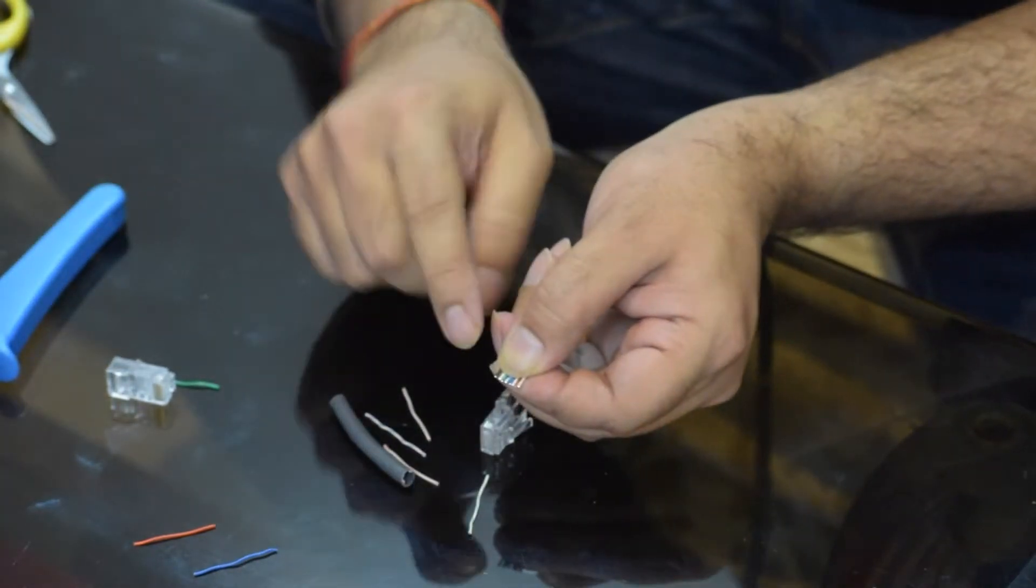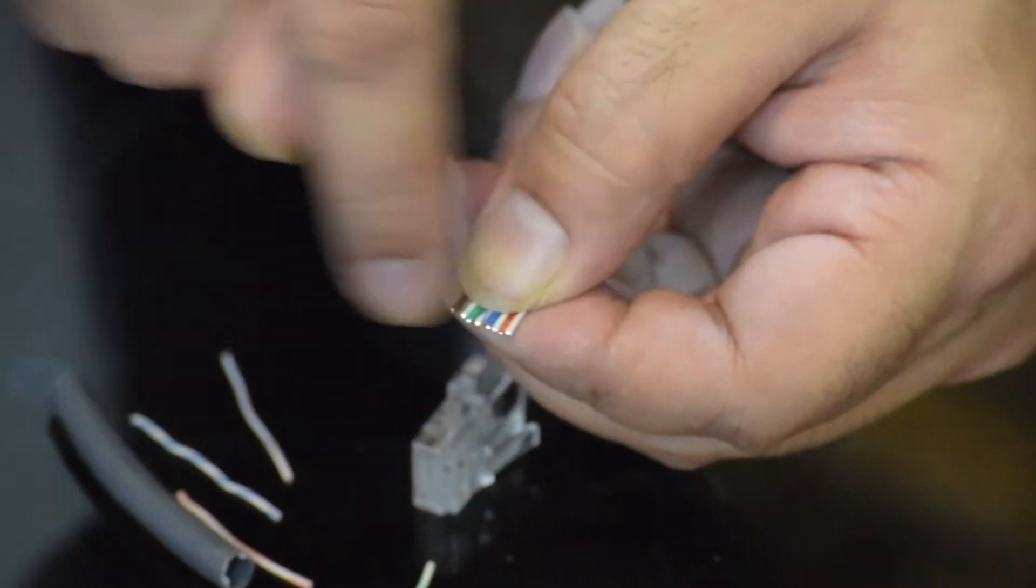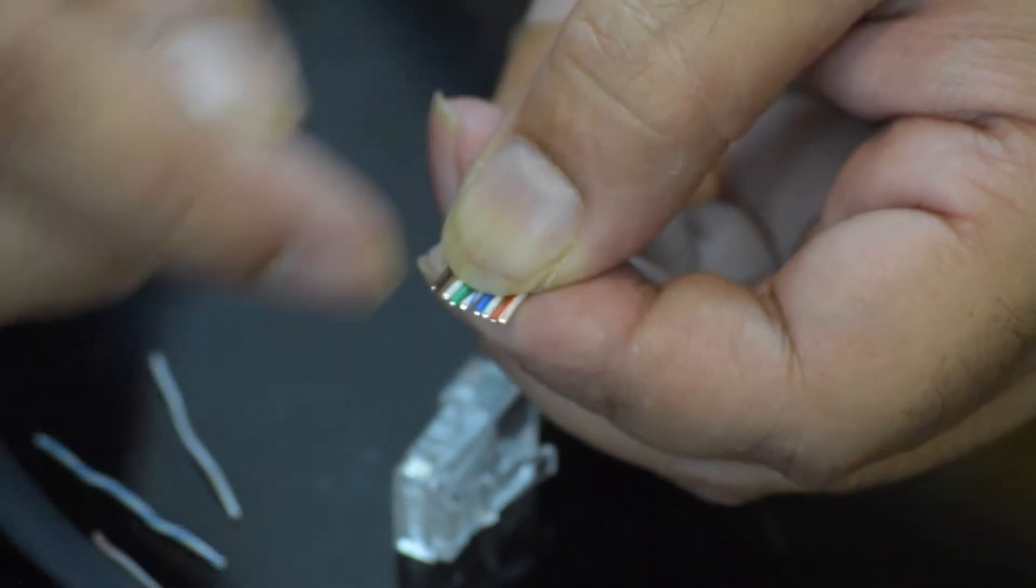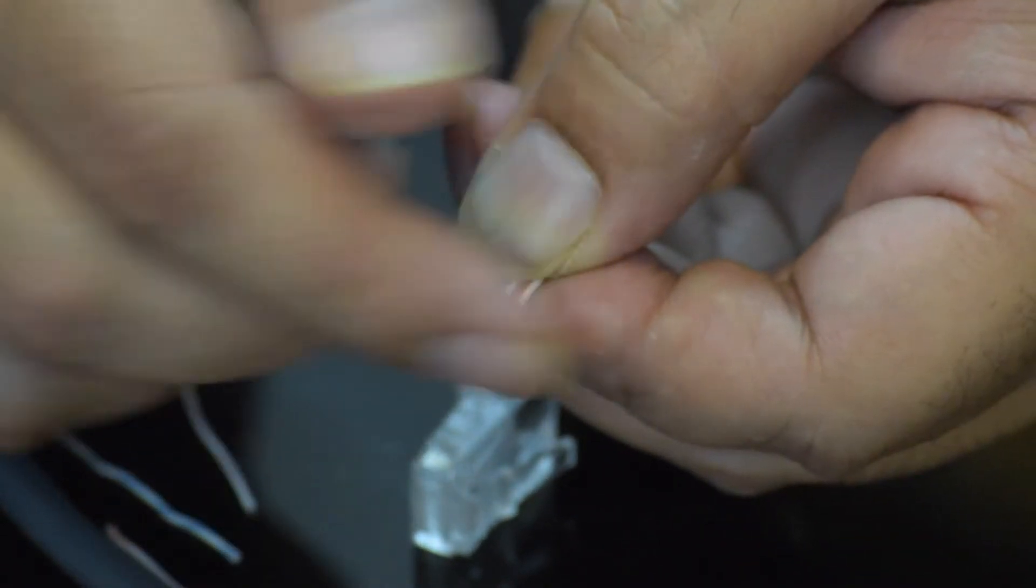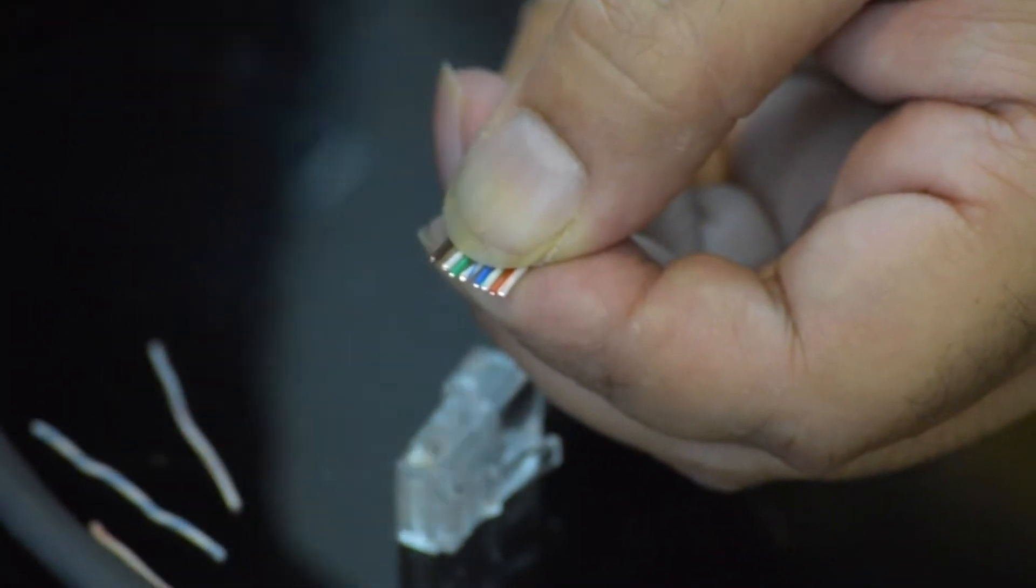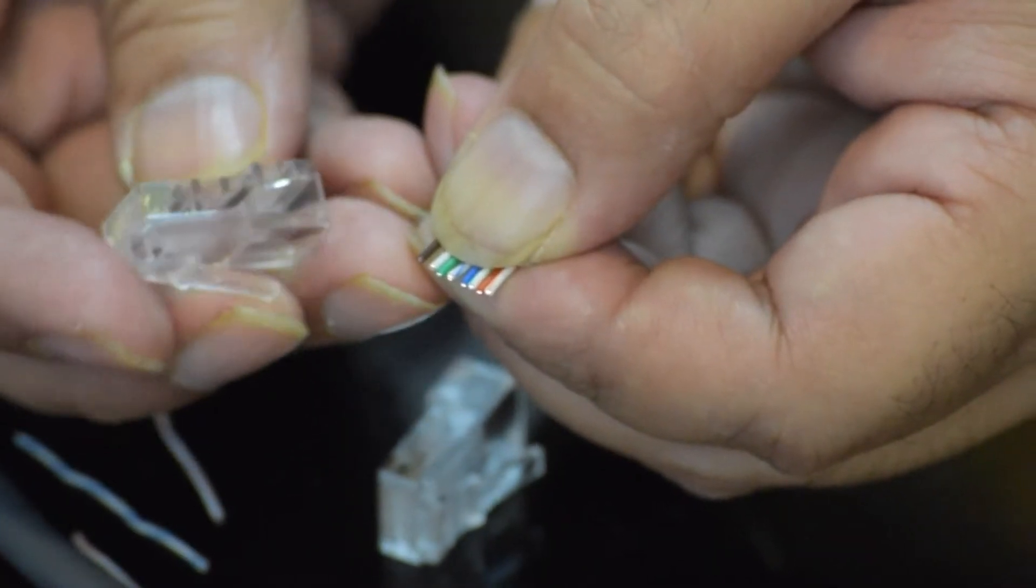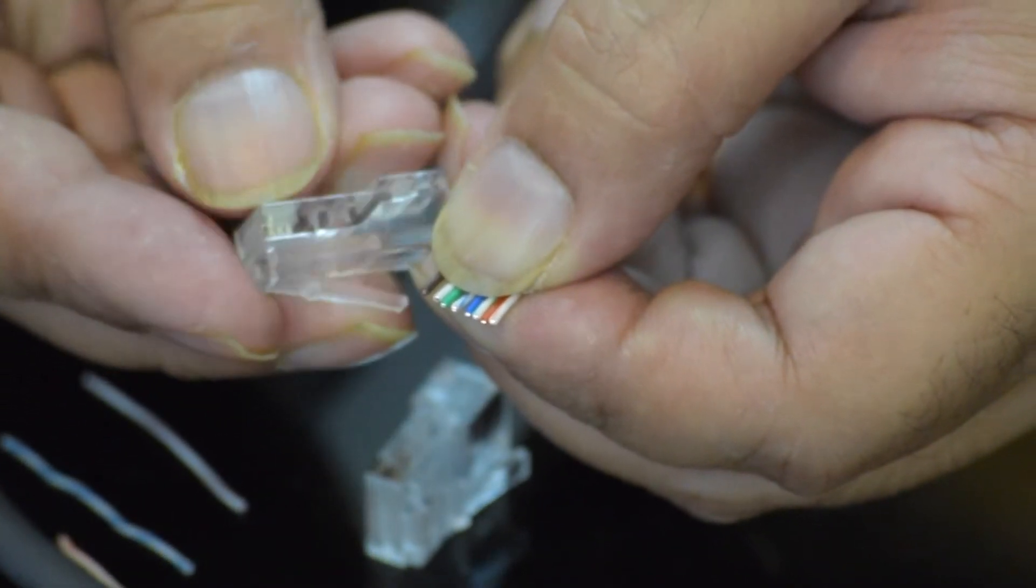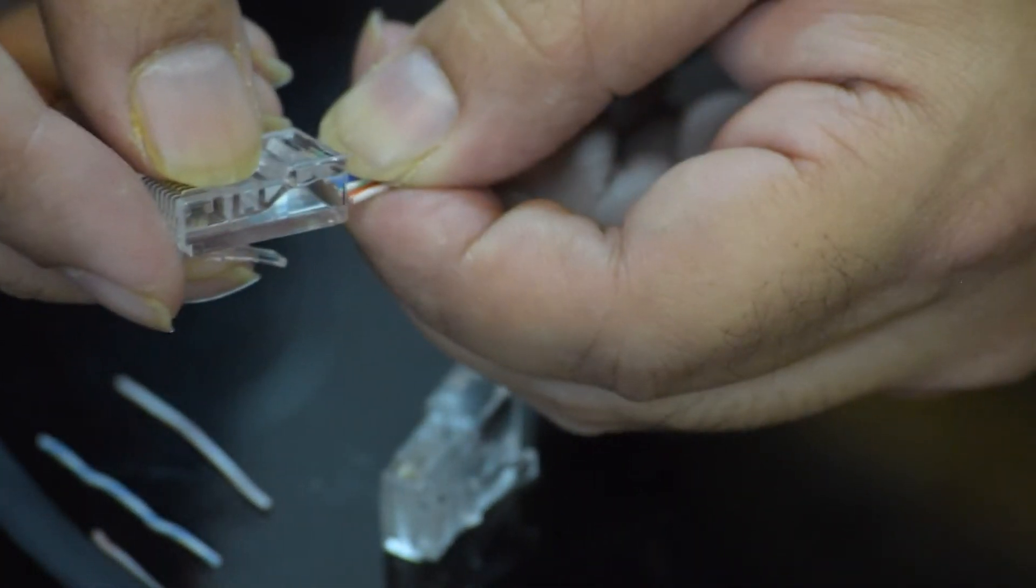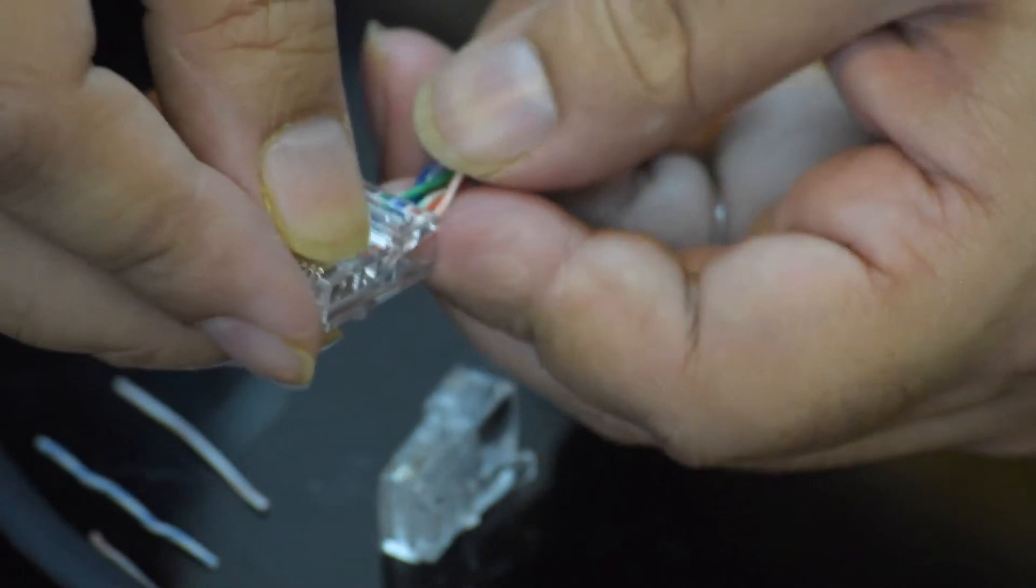An important thing to note is that you want this to be as straight as possible. If it's a diagonal cut or if a few wires are short and long and they're not aligned properly, you might want to redo this because the cable can miss the pins on the connector. So the teeth on this connector is going to dig inside this cable and you want them all to be evenly inside the connector.